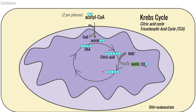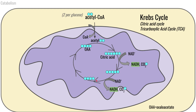From there, that five-carbon compound is going to go through another reshuffling. In that reshuffling, we're going to reduce another NAD to NADH. We're also going to lose another carbon dioxide, leaving us with a four-carbon compound.